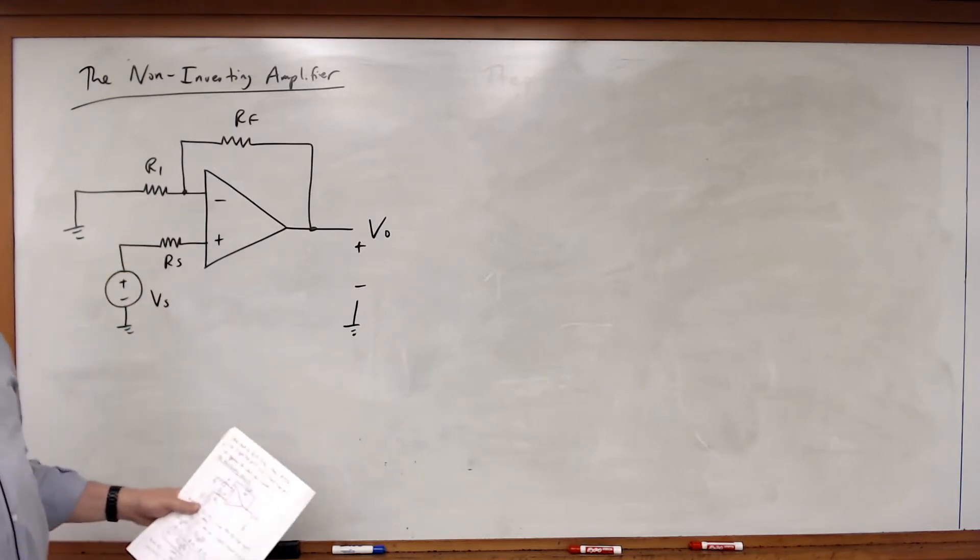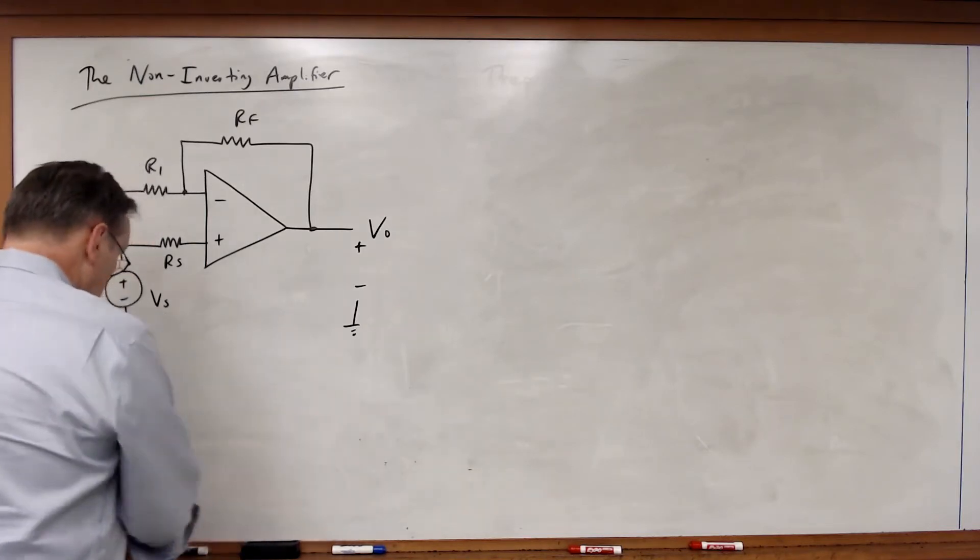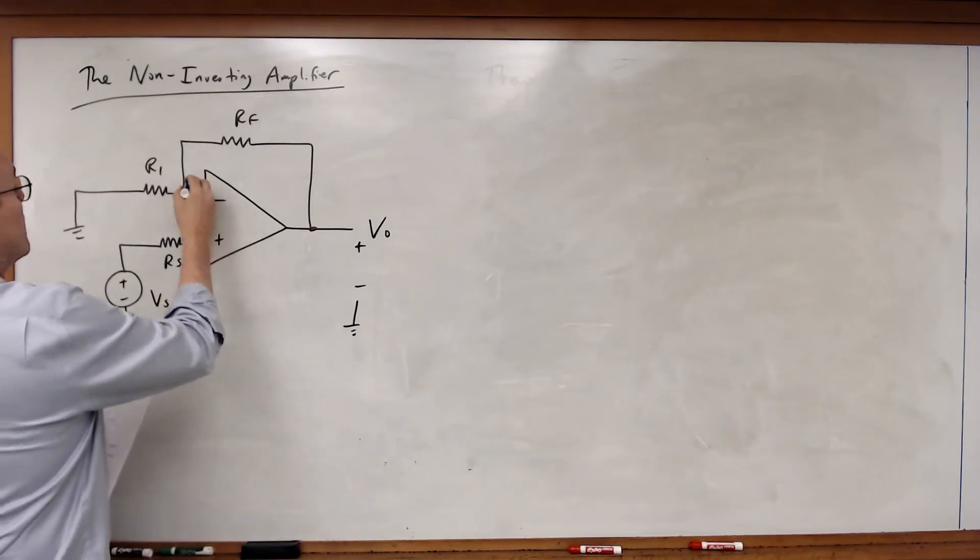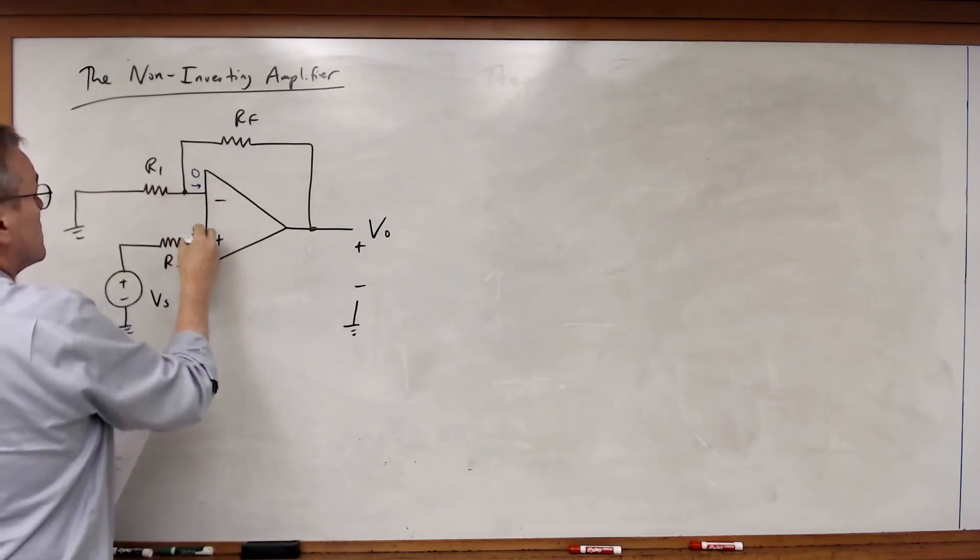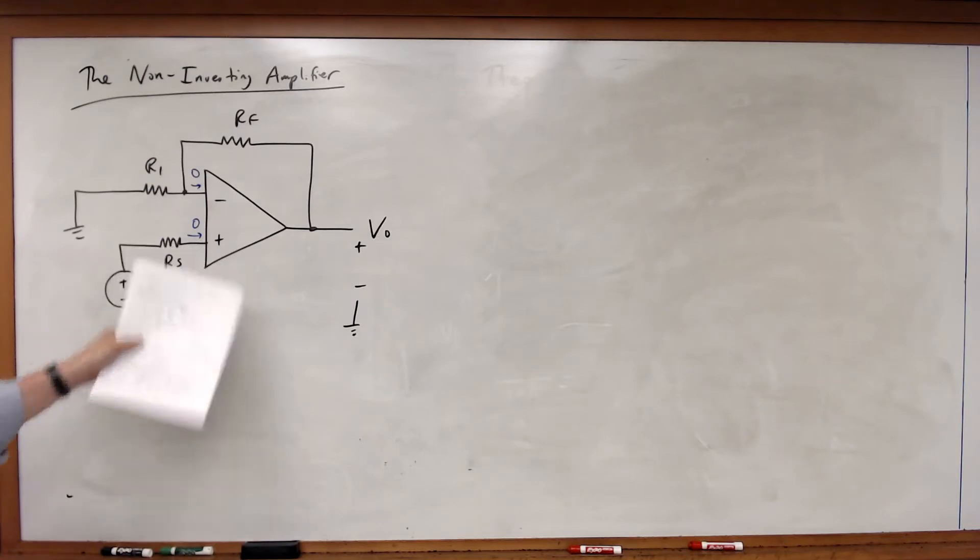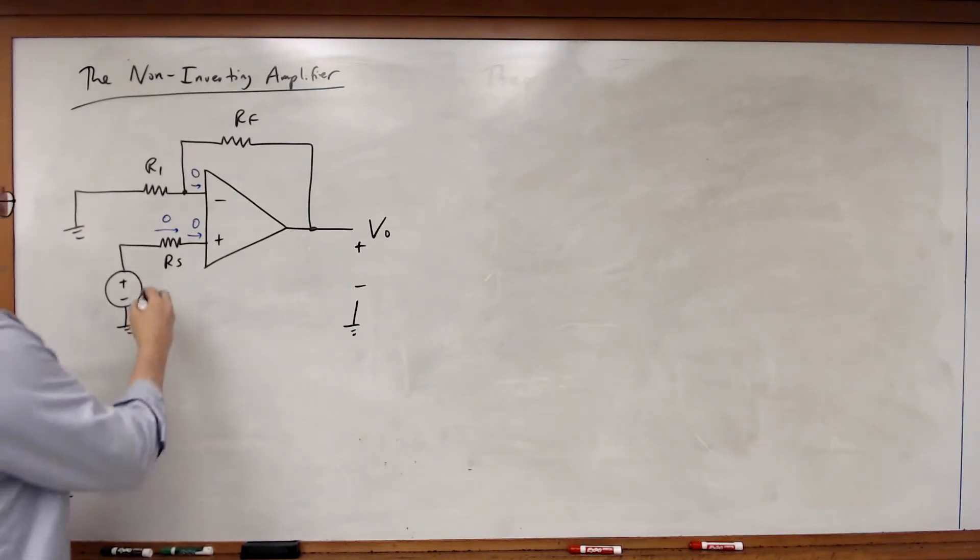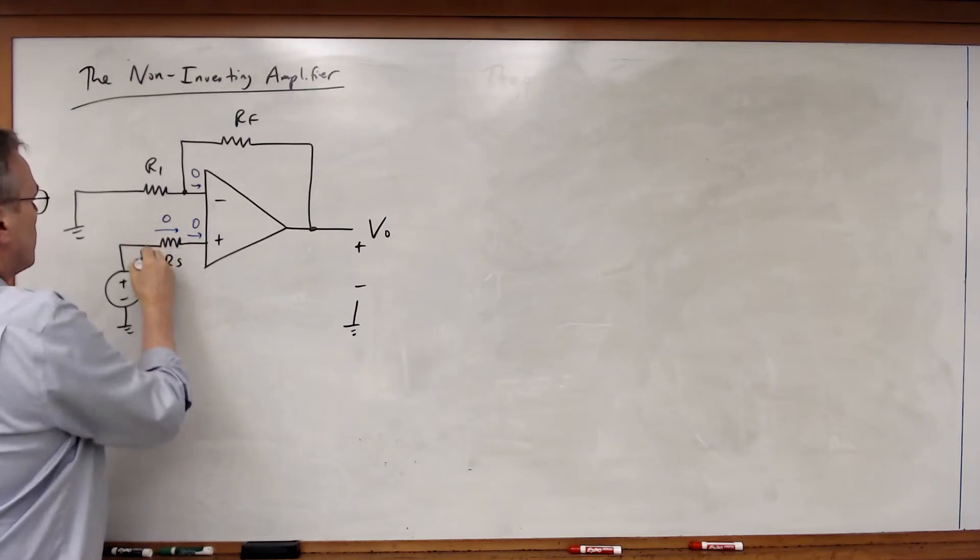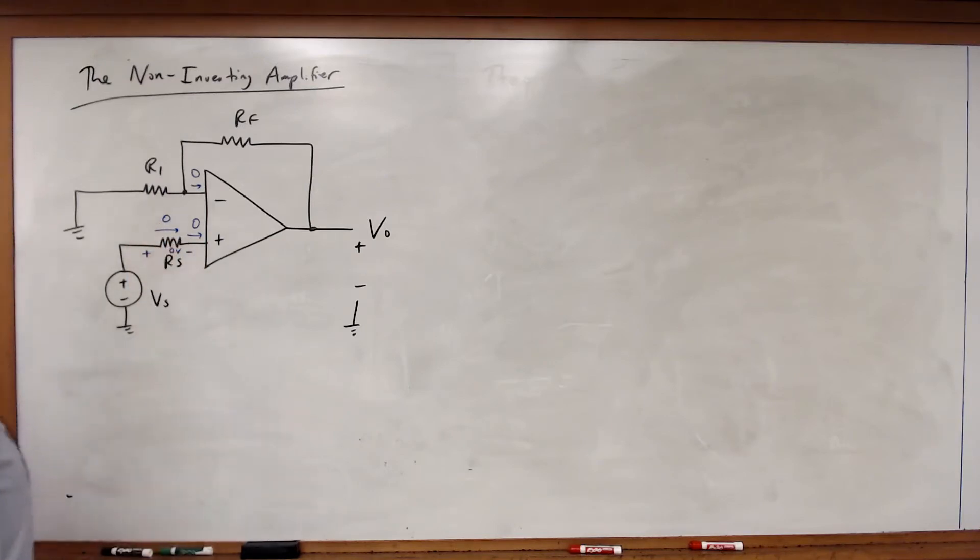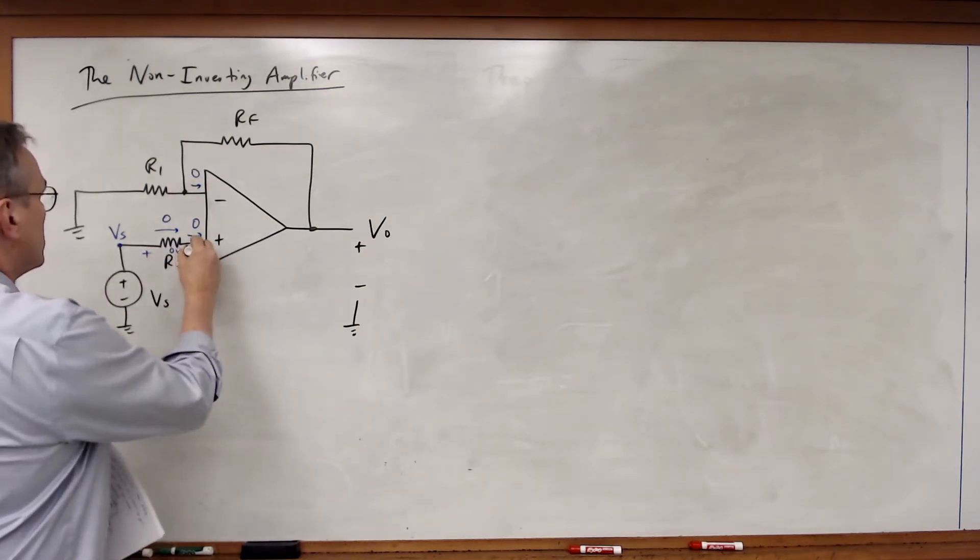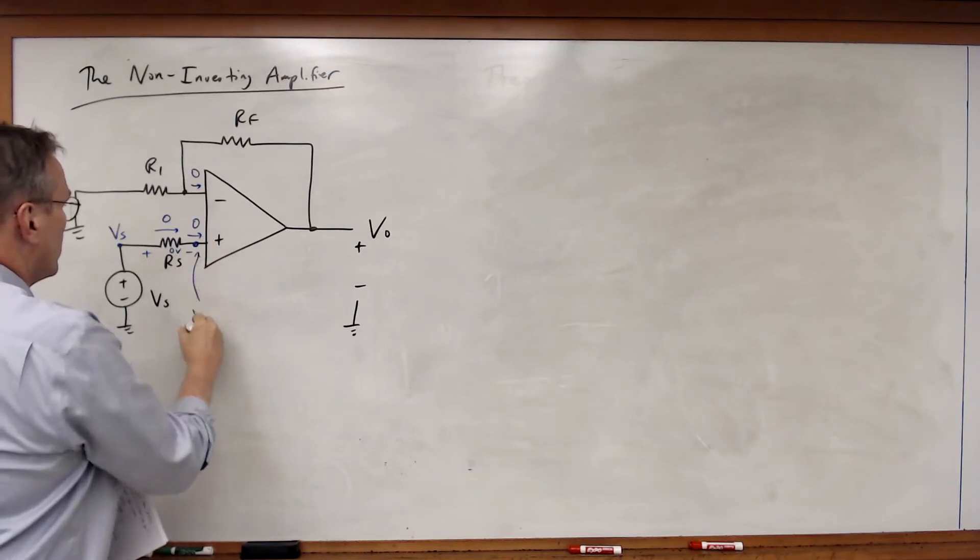So let's now analyze this, once again using the three rules. So looking at this, I know that my input currents must be equal to zero. Well if the input current of the op-amp is equal to zero, that means the current through RS is equal to zero. And that means I've got zero volts across that resistor, which means if this voltage is VS, then my voltage at my non-inverting input must also be equal to VS.